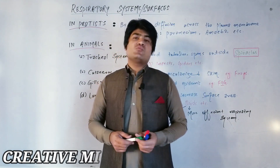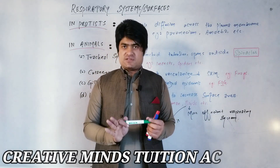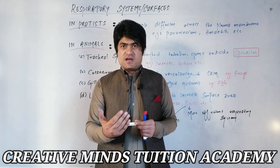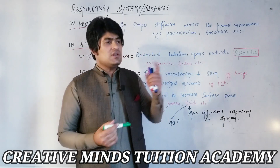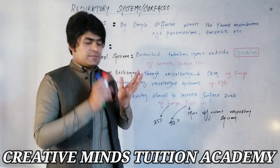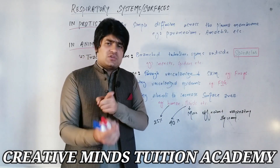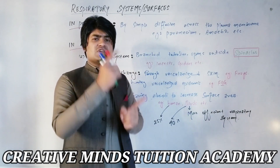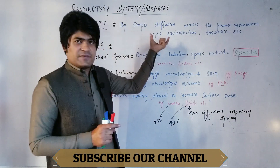I am Hilal Ahmad and this is Creative Minds Tuition Academy. I am going to discuss that animals and protists use respiratory surfaces for gaseous exchange through many systems. The gaseous exchange occurs through simple diffusion across the cytoplasm and membrane. The first point is through the body surface by simple diffusion process.